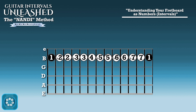It would be 1, b2, 2, b3, 3, 4, b5, 5, b6, 6, b7, 7, and then back to your root. That's all 12 notes. This is a helpful way to visualize all the intervals and see them in a linear fashion.